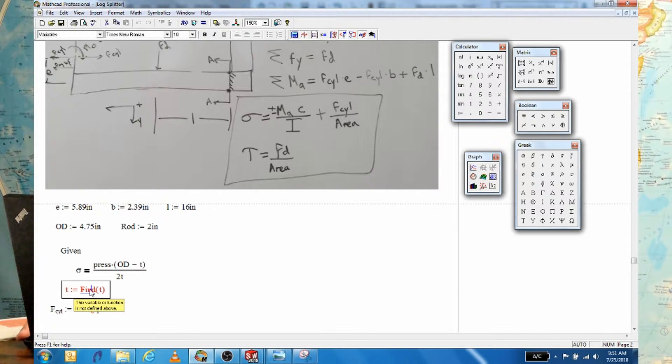When we hover over, it says this variable or function is not defined above. Well we know our OD is defined. T isn't defined. So let's just say T is equal to a quarter inch. And it's still giving us an error because we haven't specified our stress. So now we need to ask something. It's kind of industry standard, but not very well known. What the heck is the stress?